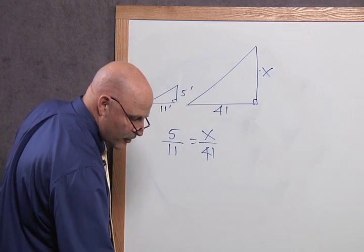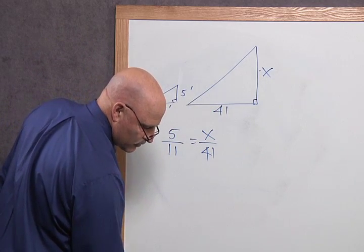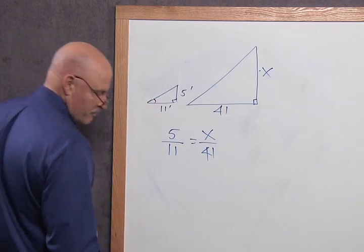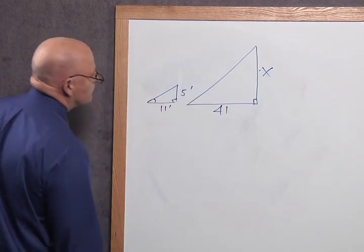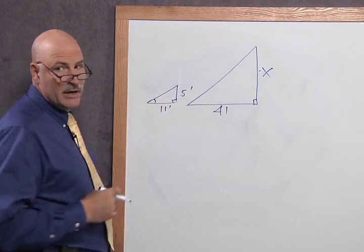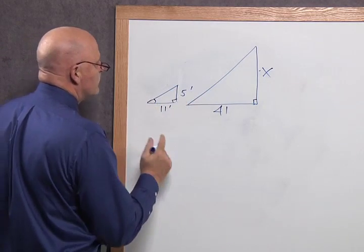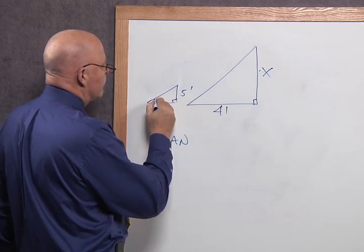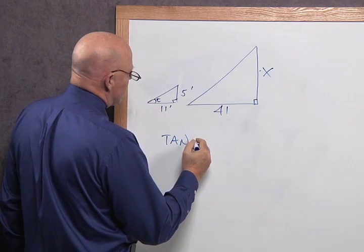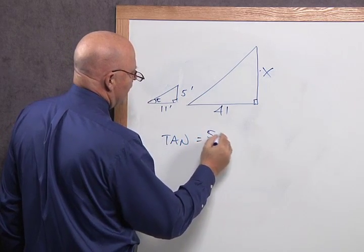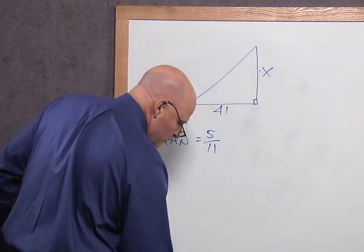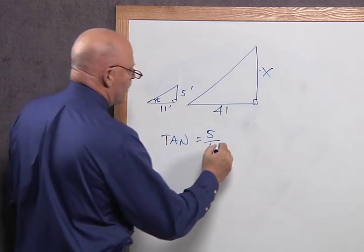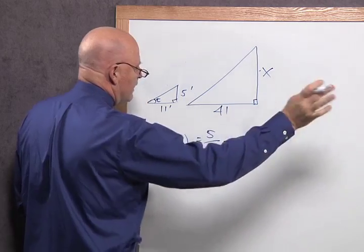But how can we do this using our newfound skills? What angle is this right here? Let's find this angle. Am I going to use sine, cosine, or tangent? Tangent, because I've got opposite over adjacent. I'm going to say tangent of this angle, we'll just call it E for elevation. So the tangent of this angle is 5 over 11, which if I punch that into my calculator, 5 divided by 11 equals 0.4545 ad infinitum. We'll just leave it like that.